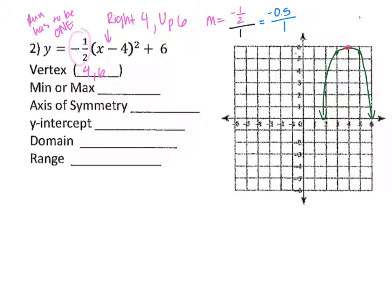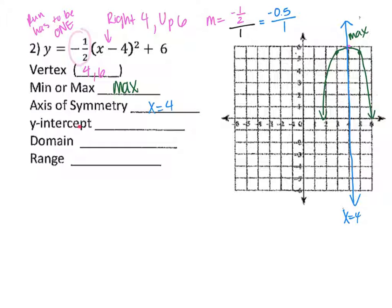Looking at this picture, the vertex appears to be a maximum because it's the highest point on this parabola. The axis of symmetry looks like it hits at x equals 4 — write this as x equals 4, as an equation. For the y-intercept, I don't know what that is from the graph, so I have to plug in 0 for x.